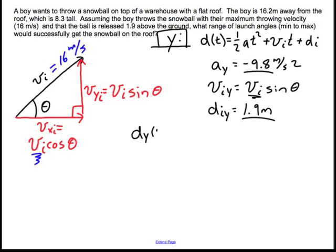D in the y as a function of time is going to be equal to negative 4.9, that's in meters per second squared, but that's times time squared, plus v initial is this full vi sine theta. This full quantity is going to be multiplied by time plus 1.9 meters. So we will leave this alone for just a moment.